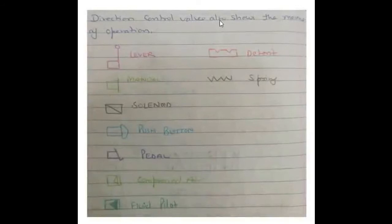Direction control valves also show the means of operation. The first symbol is it can be operated by lever. The second symbol is manual operation. The third symbol is solenoid. The fourth one is push button. The fifth one is pedal.